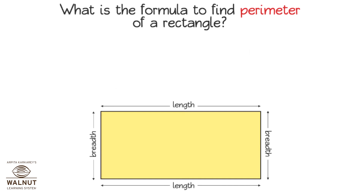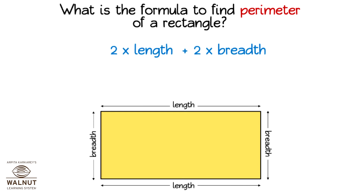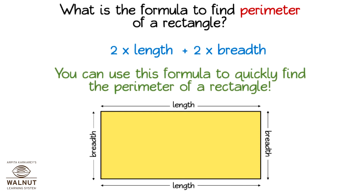What is the formula to find the perimeter of a rectangle? It is 2 times the length plus 2 times the breadth — that is 2 into length plus 2 into breadth. You can use this formula to quickly find the perimeter of a rectangle.